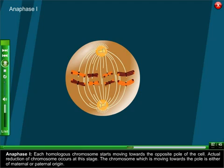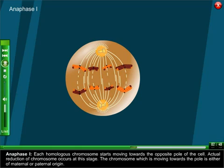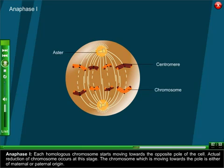Anaphase one: Each homologous chromosome starts moving towards the opposite pole of the cell. Actual reduction of chromosome occurs at this stage. The chromosome which is moving towards the pole is either of maternal or paternal origin.